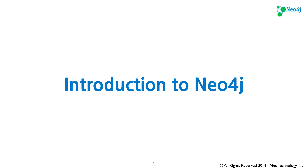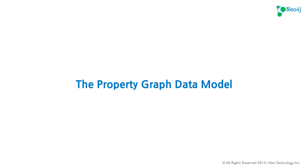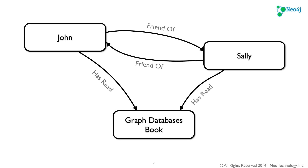Let's do a quick introduction to Neo4j. The property graph data model is what Neo4j uses to store and manage data. Here we have a graph with a couple of nodes. At the top we have two people, John and Sally. John and Sally are friends with each other, and they've both read the book Graph Databases. So here we have direct relationships with types on them — this is the basic property graph data model.